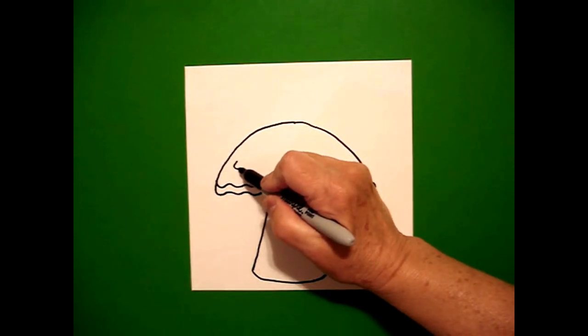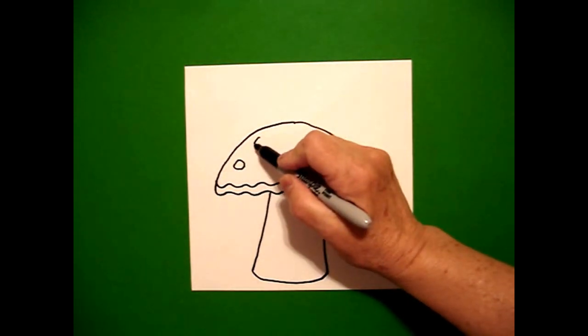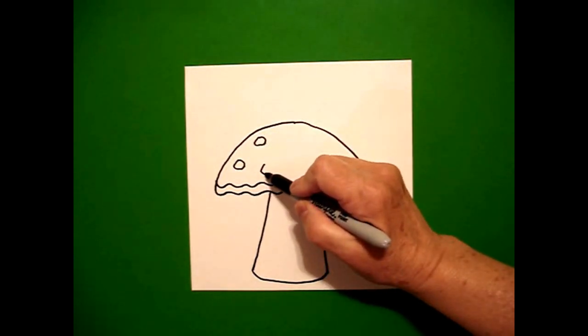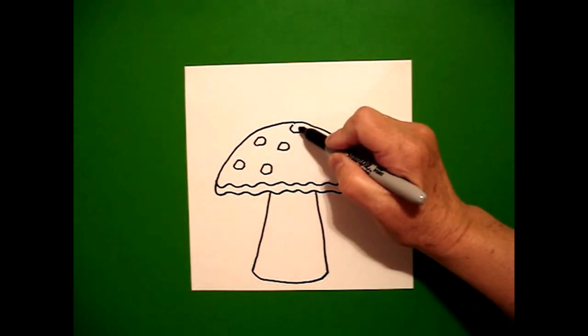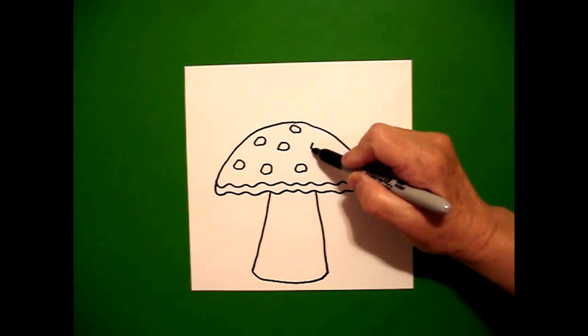Inside the main section right here, I'm just going to draw some circles or ovals, but they're not really even. They're kind of uneven because this is nature.